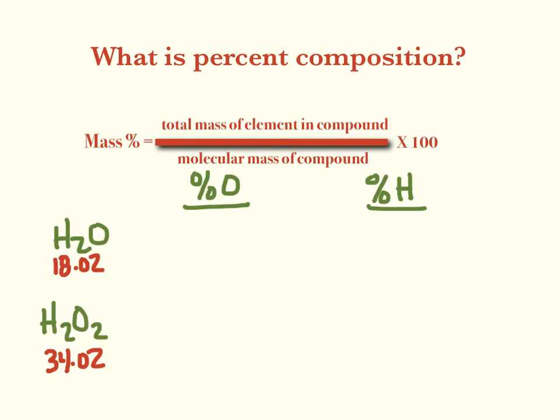So to find out the percent, we have to find the total mass of that element, so this is oxygen, our first one. There's only one oxygen, and the mass of that, according to the periodic table, is 16.00 grams divided by the molecular mass, which is 18.02. I keep saying grams instead of AMUs, but they are interchangeable, even though we're talking about molecular and molar in different cases.